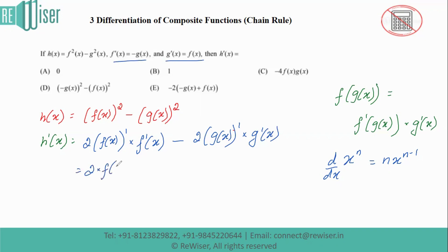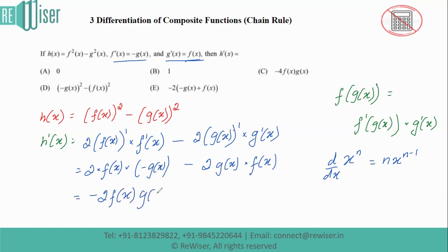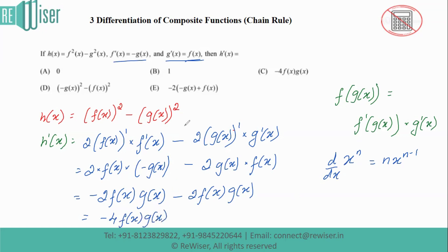Now substituting the given values: the derivative becomes 2 times f(x) times f'(x), which is minus g(x), giving minus 2·f(x)·g(x). Then minus 2 times g(x) times g'(x), which is f(x), giving minus 2·f(x)·g(x). Since these are like terms, adding them gives minus 4·f(x)·g(x). This is the final answer, so option C is correct.